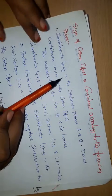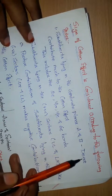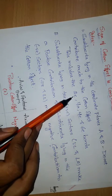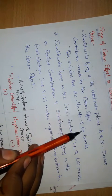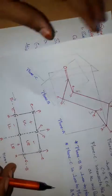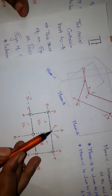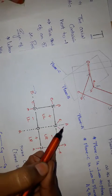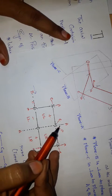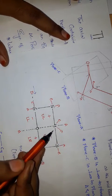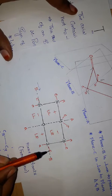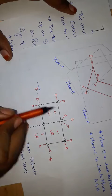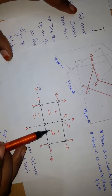Substituents lying in the coordinate planes A and B do not contribute much to the Cotton effect — that is, the 2E (equatorial), 4A, 4E, and 6E bond positions. If molecules have substituents attached in these positions, they do not show a significant Cotton effect.